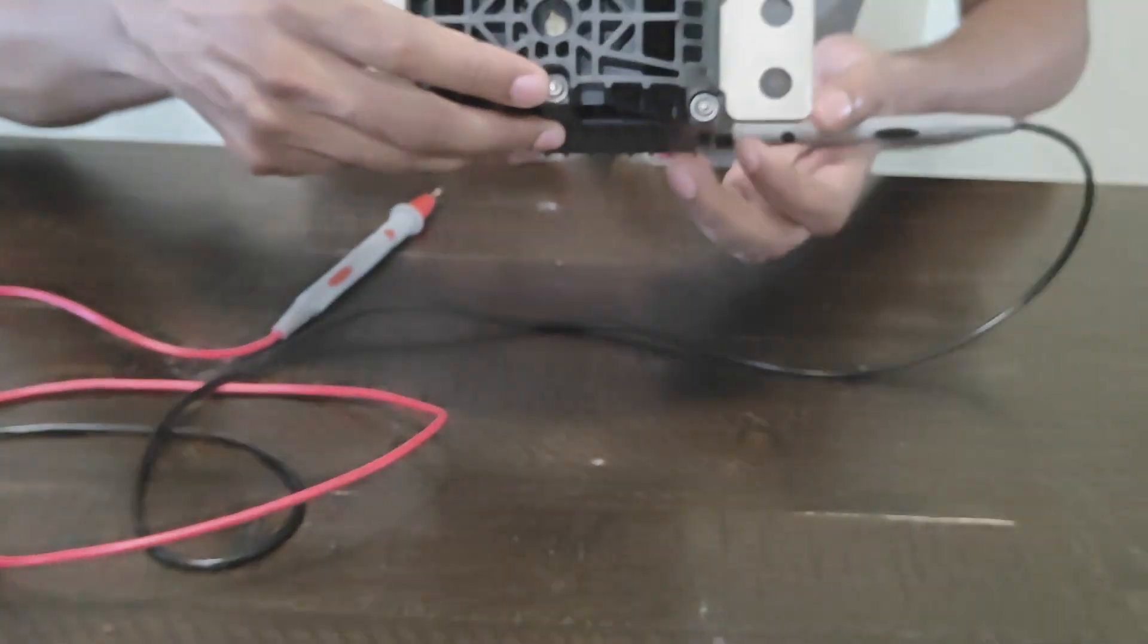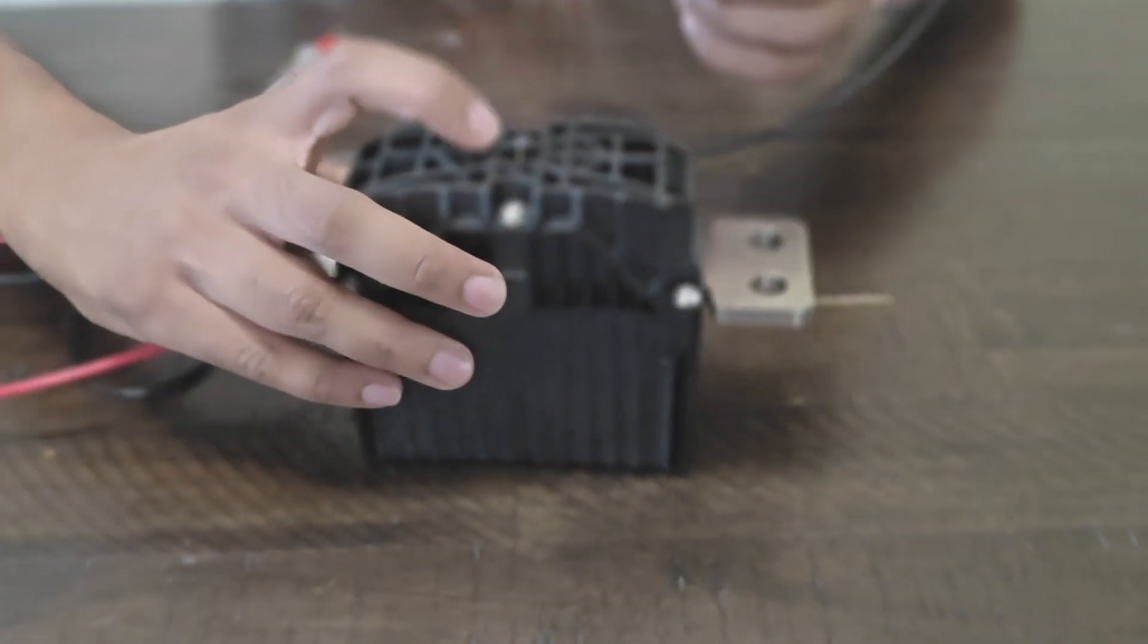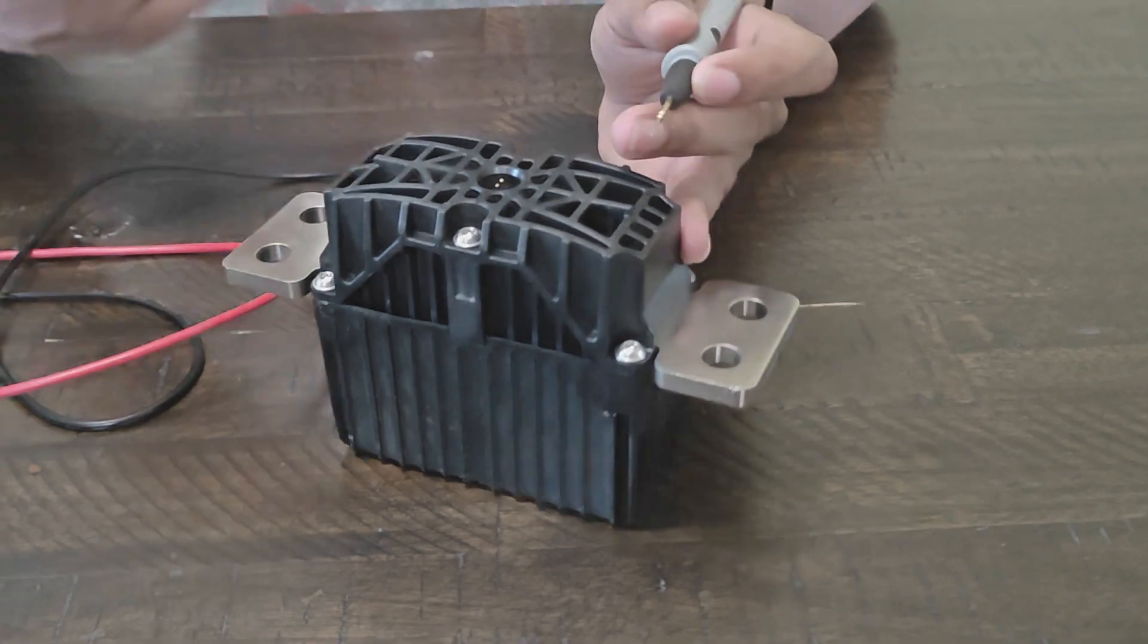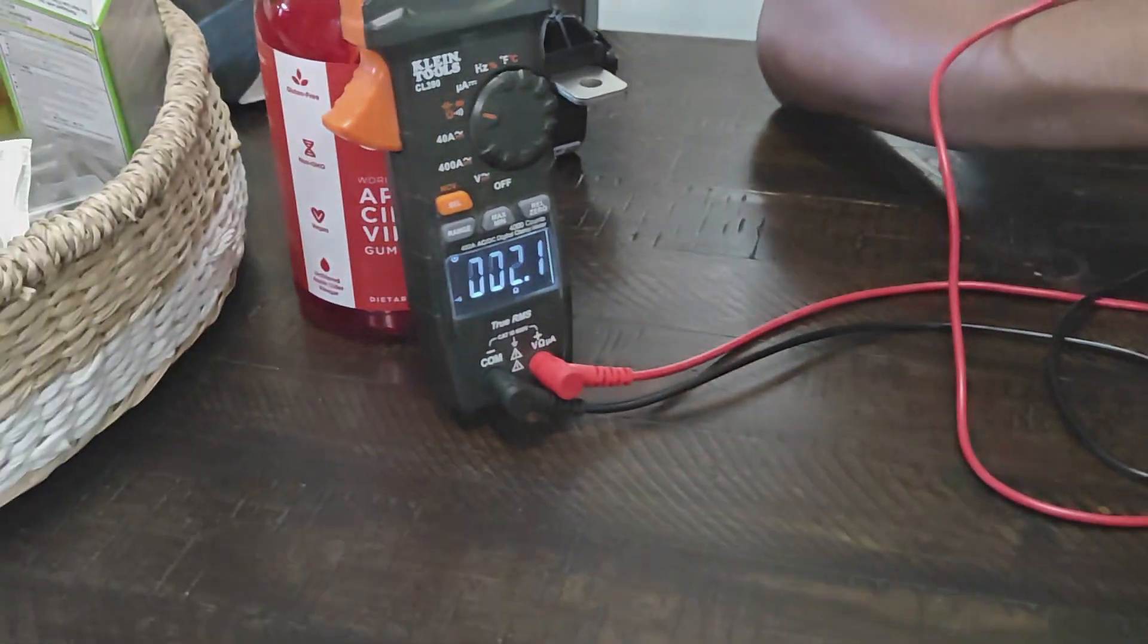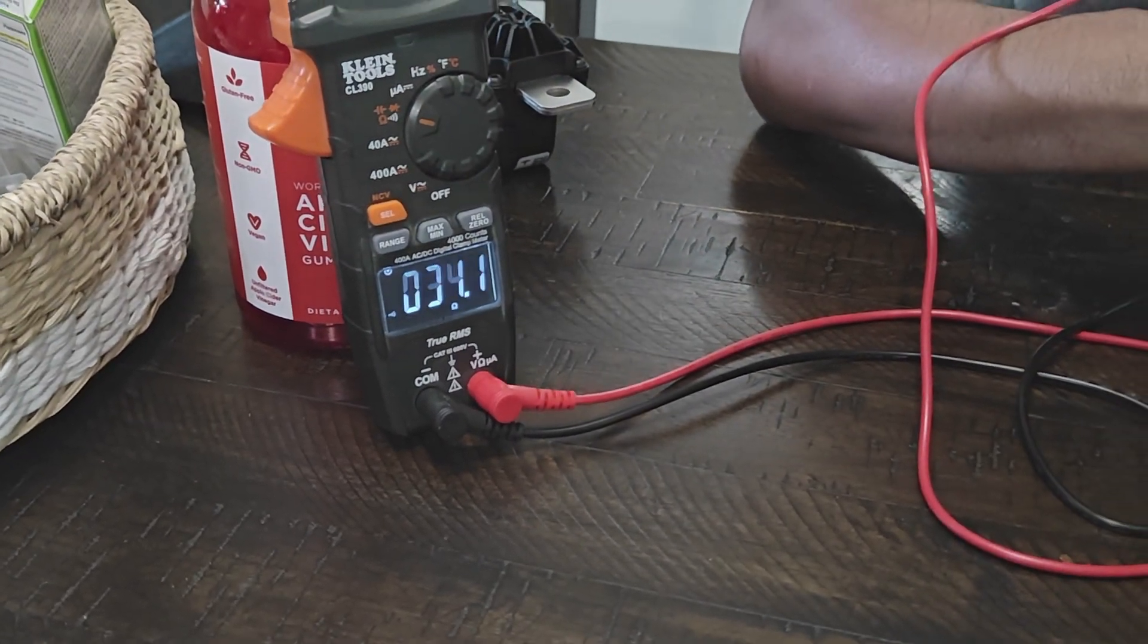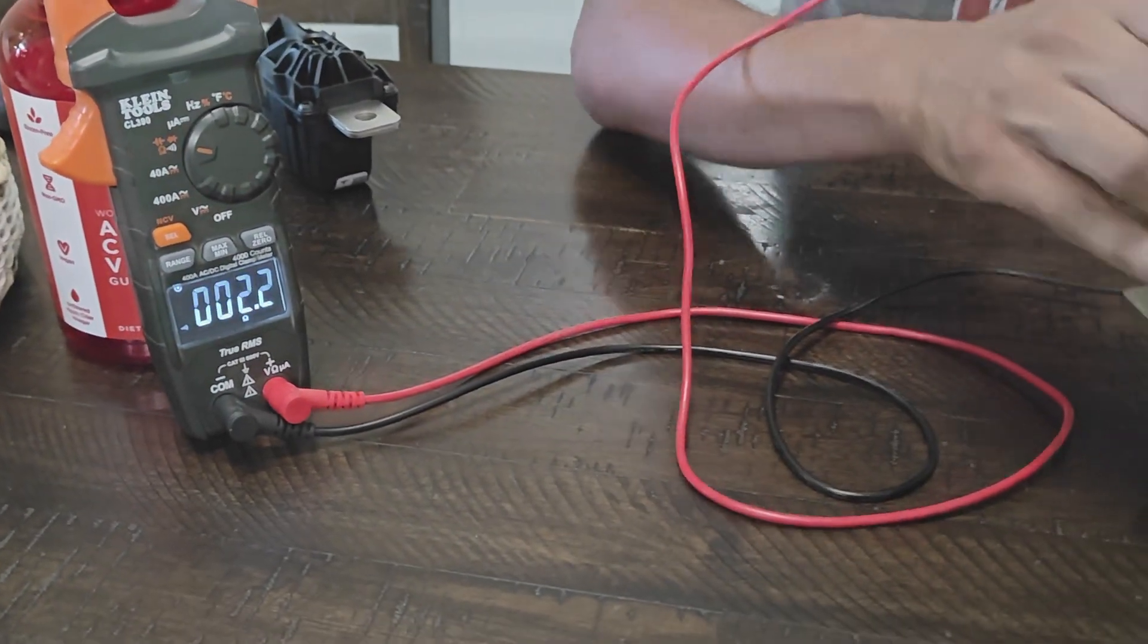I'm also going to check the fuse as well and I'll explain why in just a minute. As you can see you can get anything between 2.1 to 2.4 ohms. Same thing.